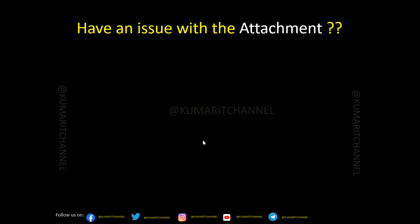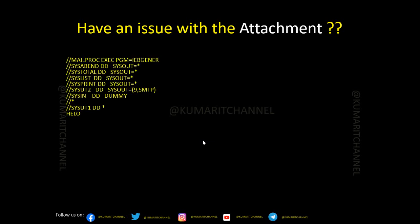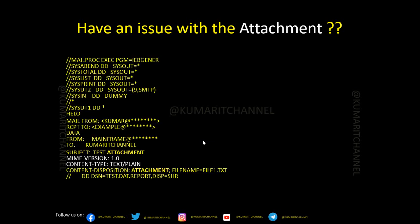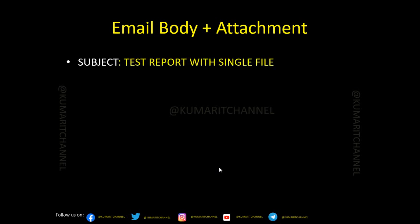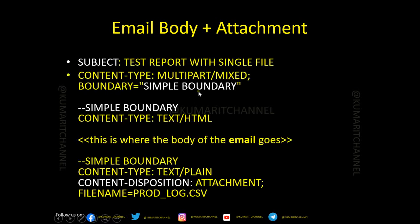If you have an issue sending an email with an attachment, you need to specify the Content-Type as text/plain and Content-Disposition as attachment. Sometimes people forget this line and that causes the issue. You also need to use the MIME-Version header. If people forget to add MIME-Version and Content-Type and only give the file name, they will get an error while sending the email.